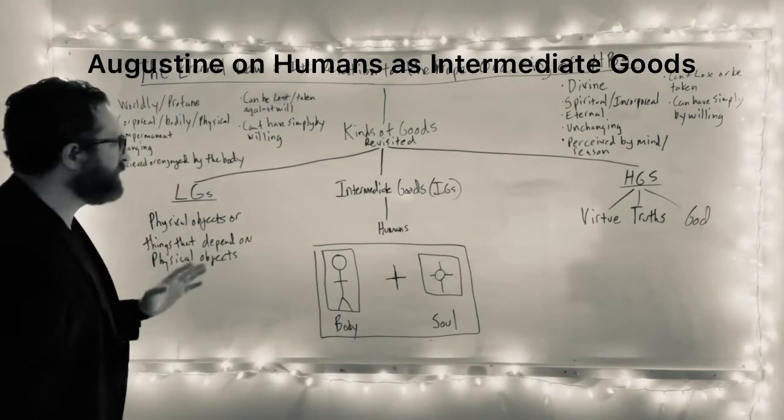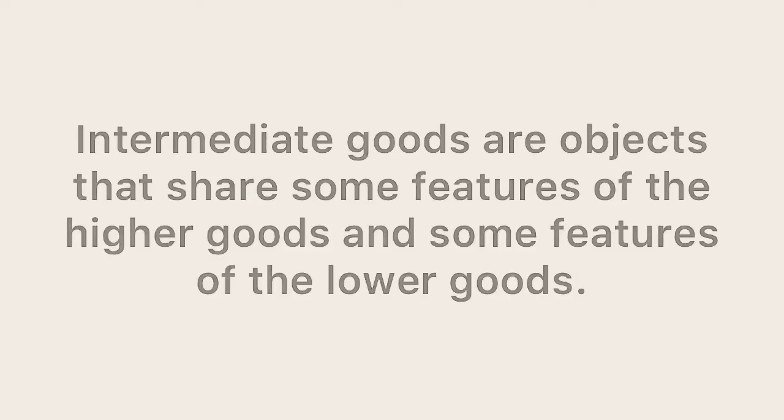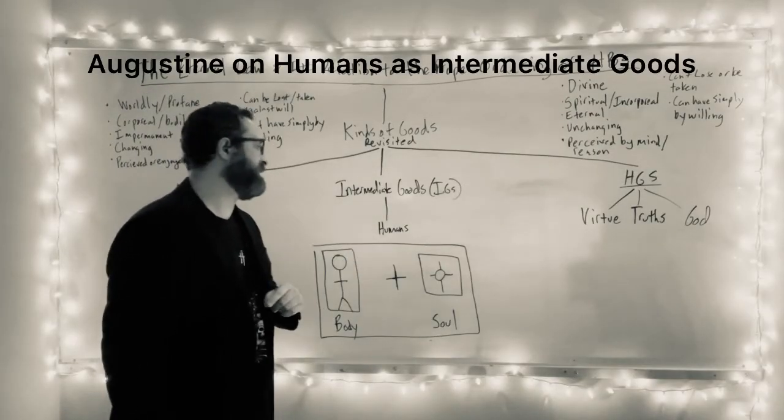Okay. So, the intermediate goods. Augustine includes humans in here.